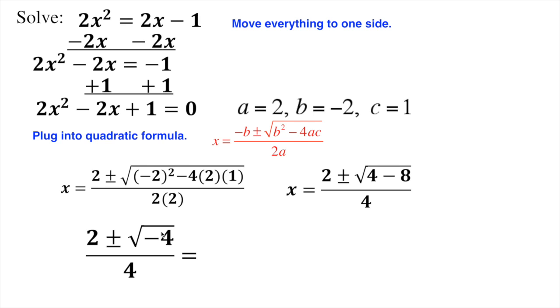And that's where our imaginary numbers come in. So in order to simplify this one, well, I know that the square root of 4 is 2. So the square root of negative 4, this negative inside, is my imaginary number. So that's going to be 2i.